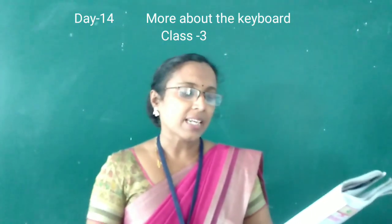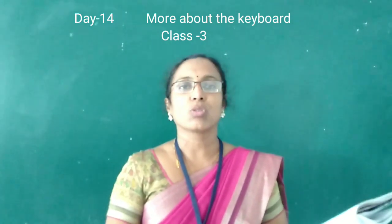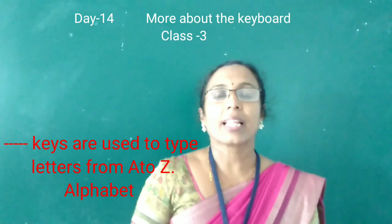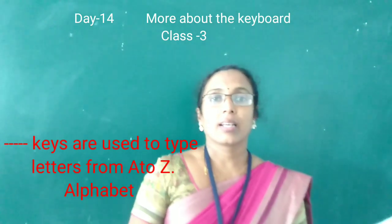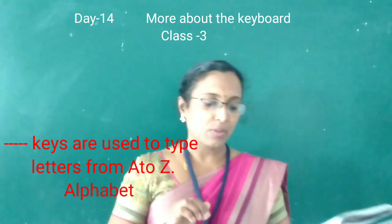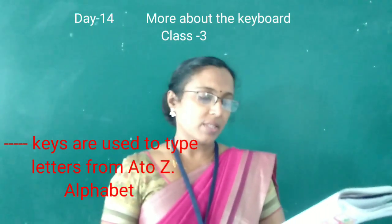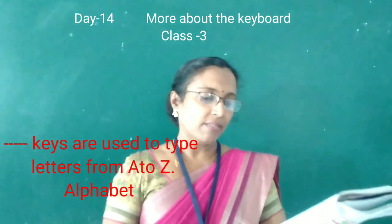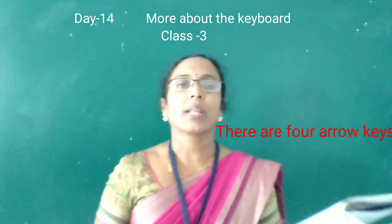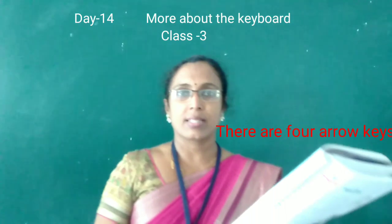Second question: which keys are used to type letters from A through Z? Alphabet keys are used to type letters from A to Z. Third question: there are how many arrow keys? There are four arrow keys on the keyboard.